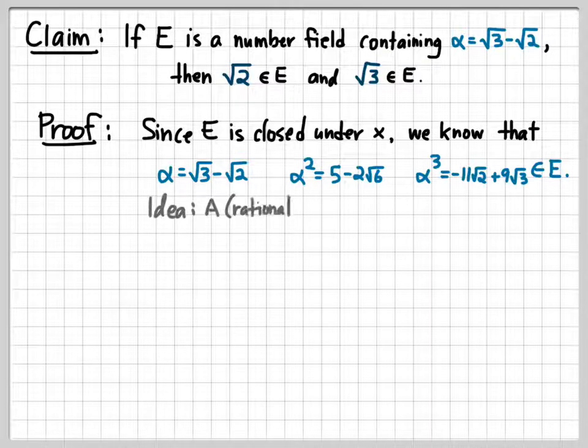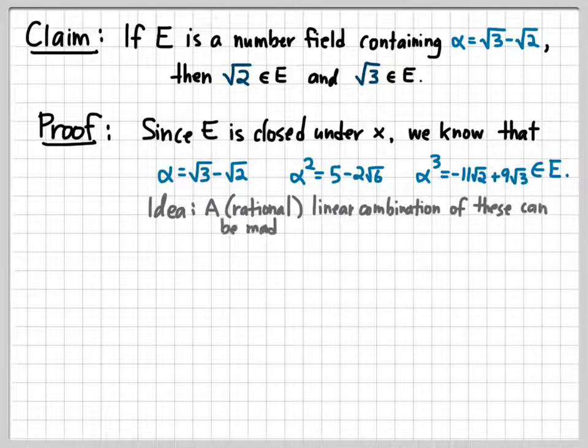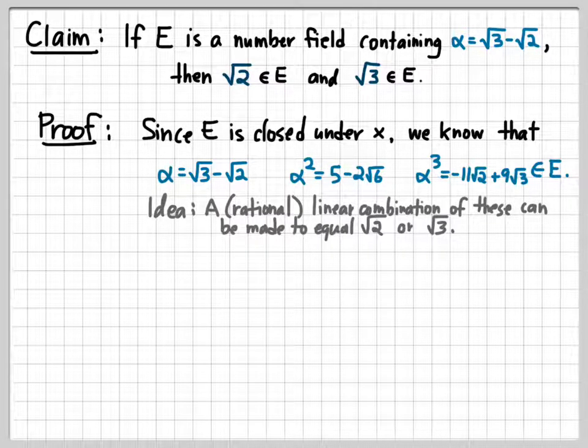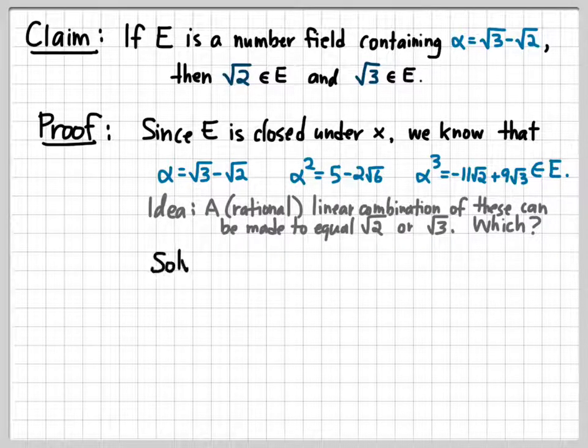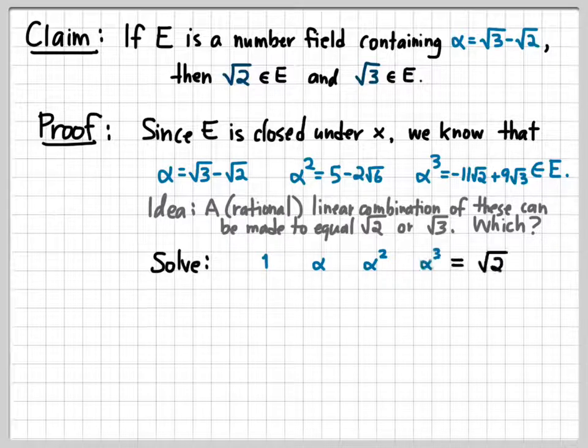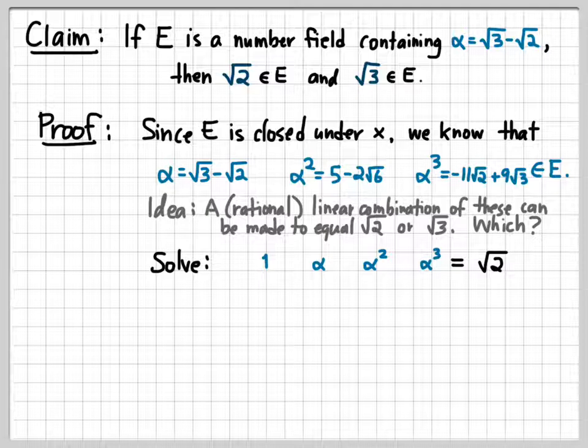Now the idea is to take these numbers and form some linear combination of them with rational coefficients and make that linear combination equal to the square root of 2 or the square root of 3. Which rational linear combination do we need? To find that out, we just have to solve the system of equations that we get by insisting that a linear combination of, let's say, 1, α, α², and α³ is equal to the square root of 2, where the coefficients of that linear combination are all rational.